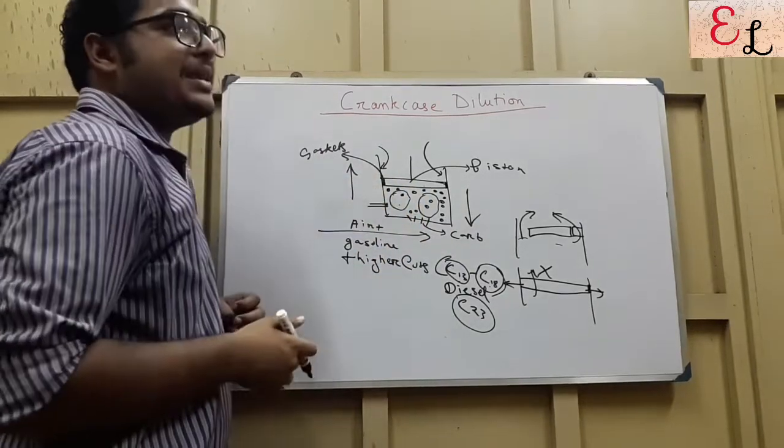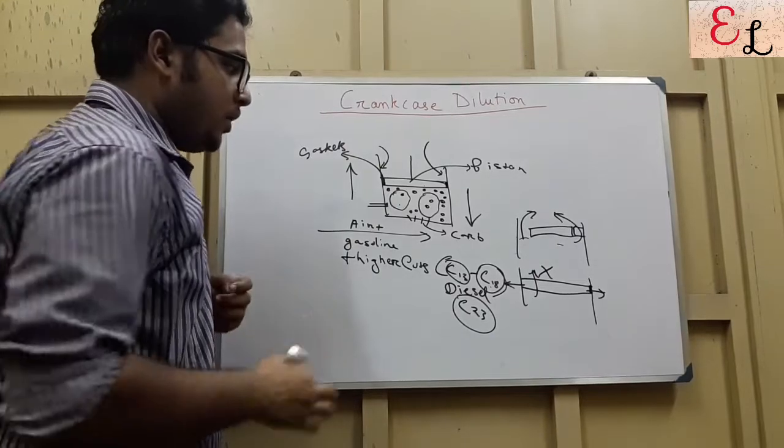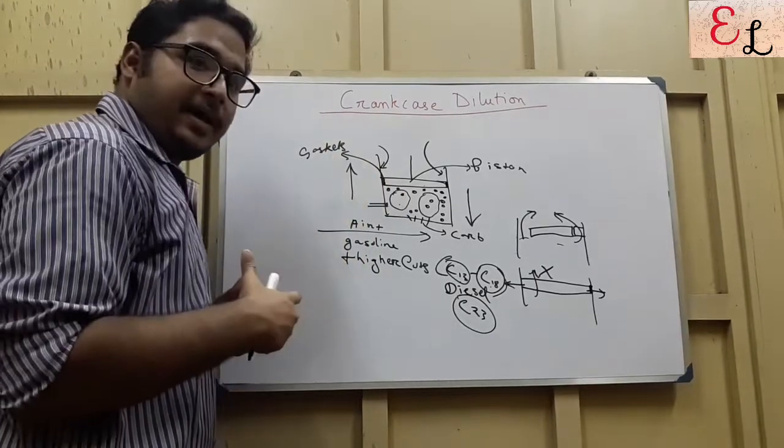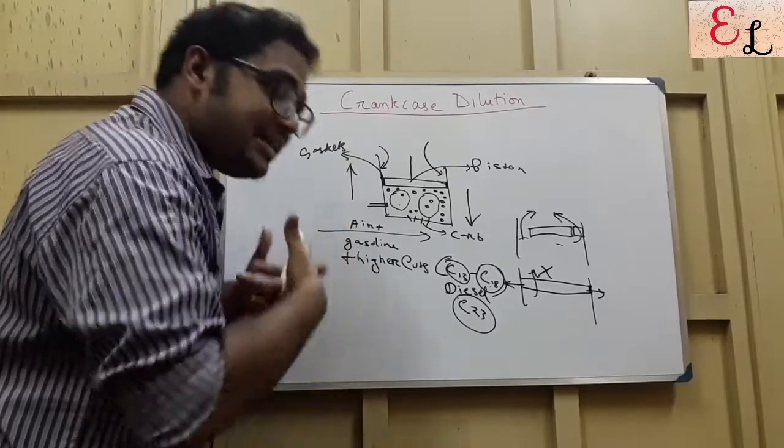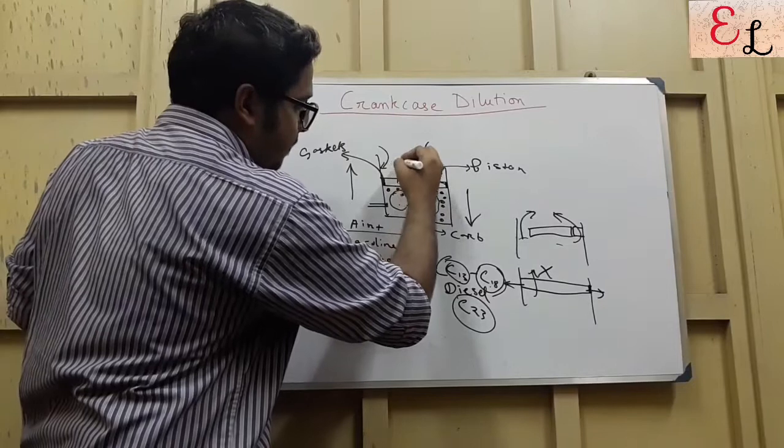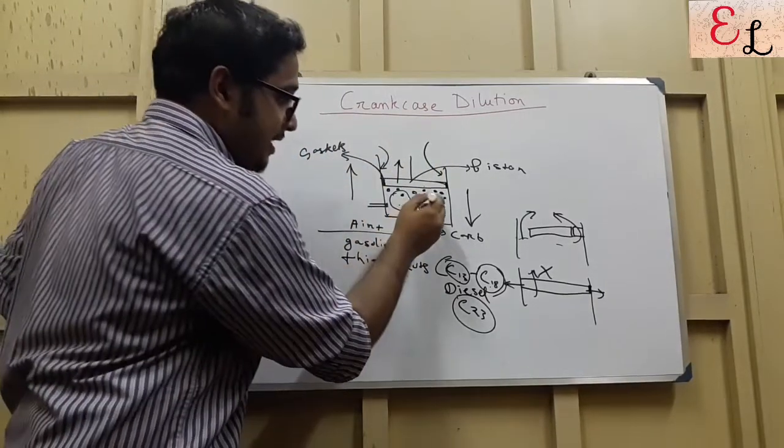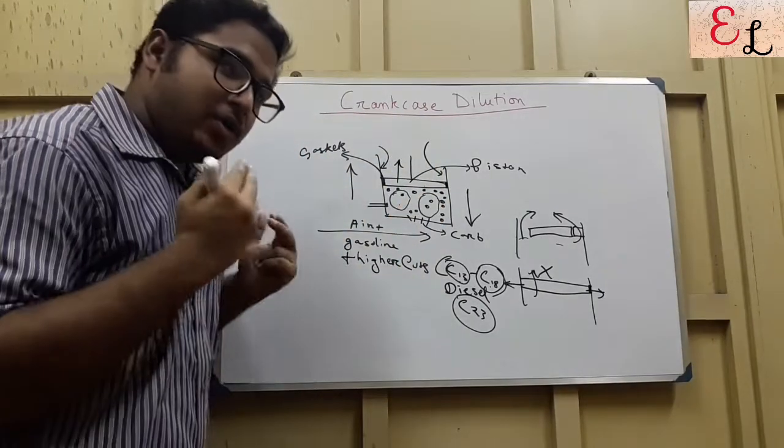So, what happens is, spark ignites at regular intervals, as we already know. The gasoline vapor catches fire. So, as soon as the gasoline vapor catches fire, and it explodes, the piston will tend to go up. Very correct. The liquid droplets will, however, not catch fire.